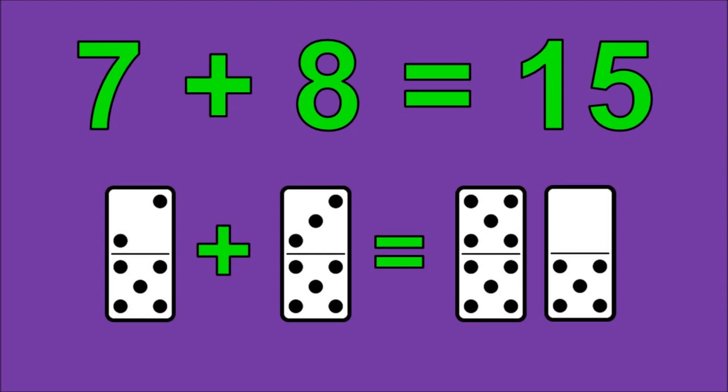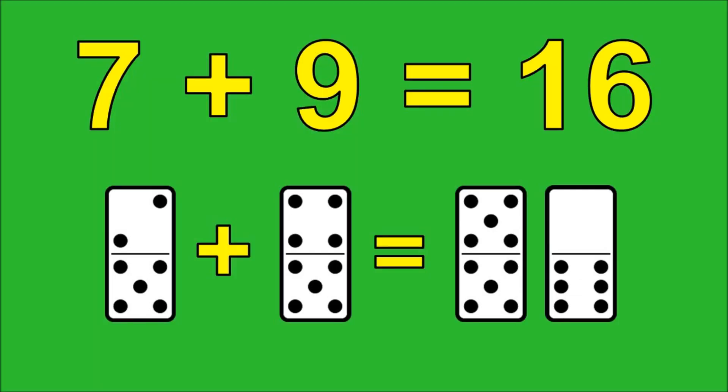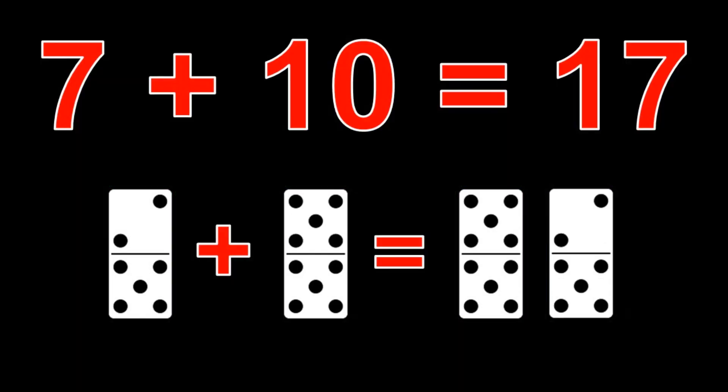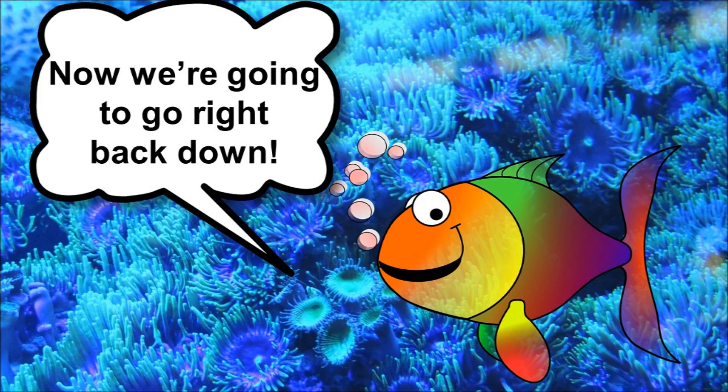7 plus 8 is 15, 7 plus 9 is 16, 7 plus 10 is 17. Now we're going to go right back down.